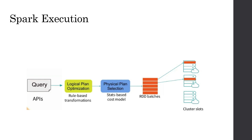The first step in any Spark execution is the creation of the logical plan. The logical plan is basically rule-based, and this is the place where partition pruning, folding, and all of that is done, producing an optimized logical plan. There are rules in Spark that decide how to create the logical plan. After the logical plan is created, when we go to the physical plan selection, that is where a stats-based or cost-based model is used. Thereafter, the RDD batches are created, which are executed on different executors and cluster slots.